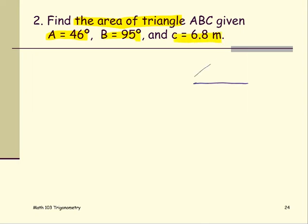So from the diagram, angle A is 46, angle B is 95 degrees, and side C is 6.8 meters.